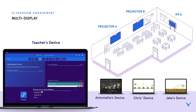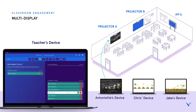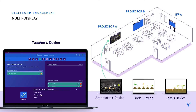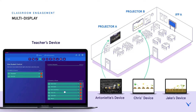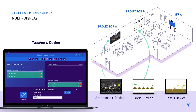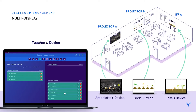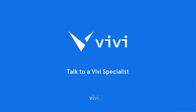In this example, our teacher has chosen to show Antoinette's work on Projector A, Chris's work on Projector B, and Jake's work on the interactive flat panel to the right of the room, all without needing to call an AV specialist for assistance. Talk to your Vivi specialist to learn more.